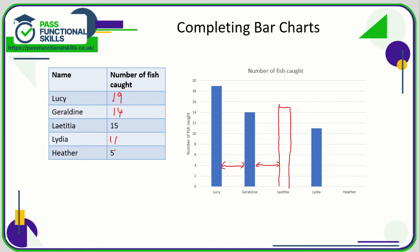Heather is 5. Again, we're going to make sure that the gaps are consistent between each bar, and this one goes up to five. Again, all the bars have to be the same width as well — and we're done.